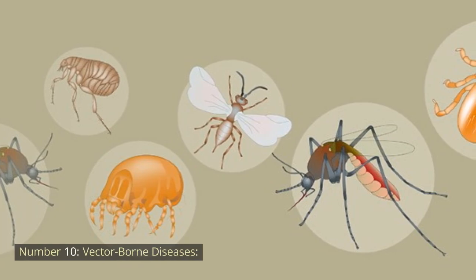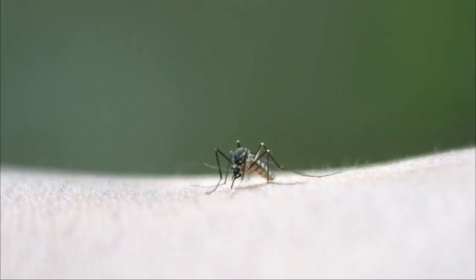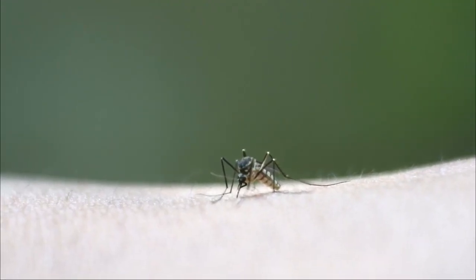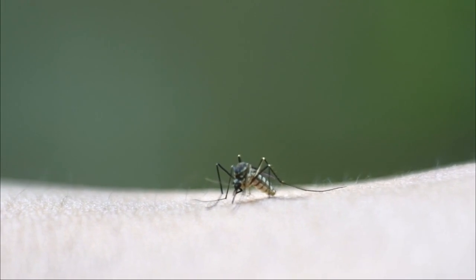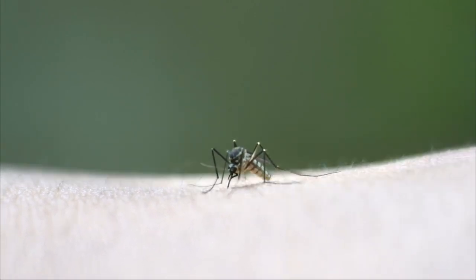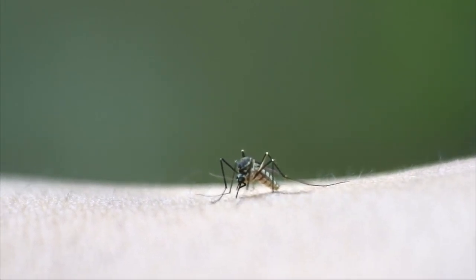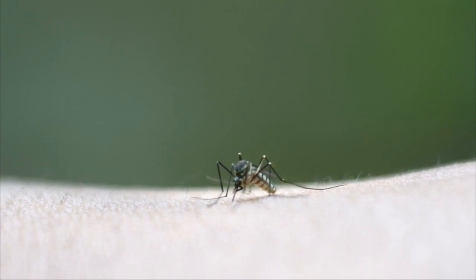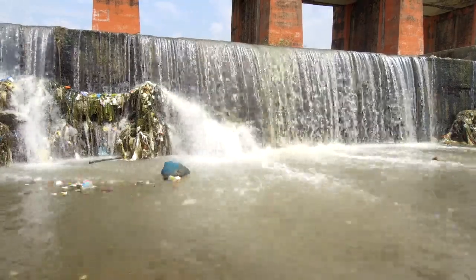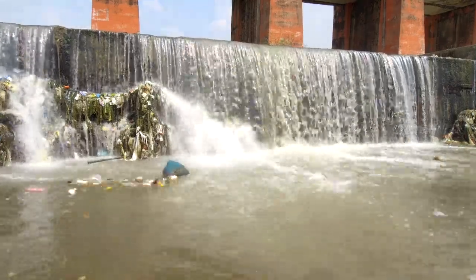Number 10: Vector-borne Diseases. Vector-borne diseases are illnesses transmitted to humans through the bites of infected vectors, such as mosquitoes, ticks, and fleas. Environmental health plays a crucial role in the prevalence of these diseases.